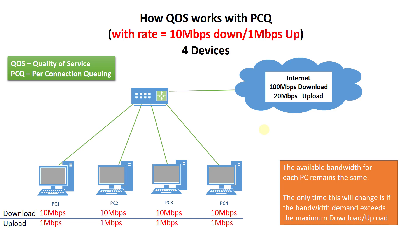Even when that device demands more bandwidth, the available bandwidth for each PC remains the same. The only time this changes is if the bandwidth demand exceeds the maximum download and upload. I'm going to show you a scenario to better explain that situation.